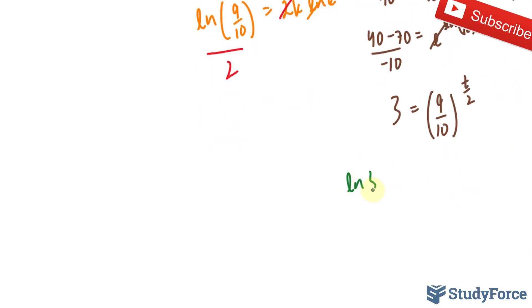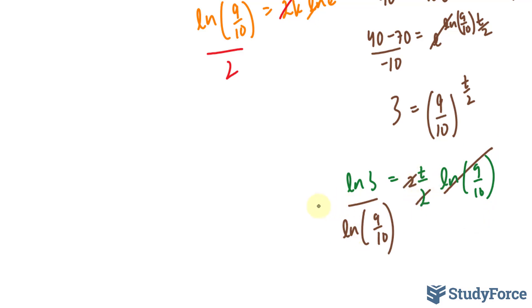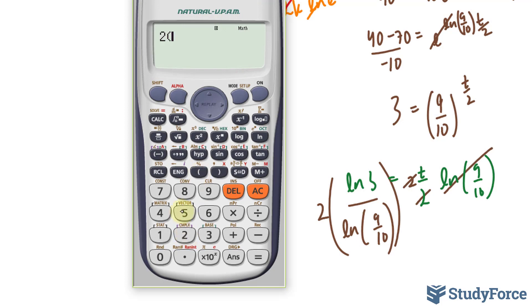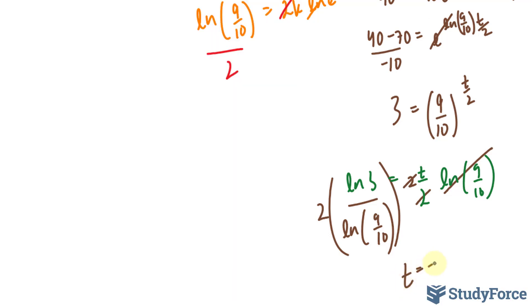I'll ln both sides once again. ln 3 is equal to t/2 ln(9/10). And then dividing both sides by ln(9/10) makes this go away. And then multiplying both sides by 2 makes that go away. Let's find out what the answer is. We have 2 times ln of 3 divided by ln of 9 over 10 gives us our time in minutes at approximately negative 21. Don't let the negative scare you.